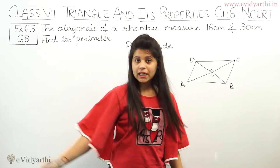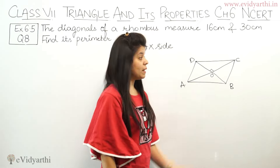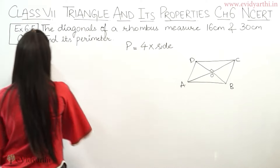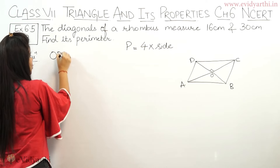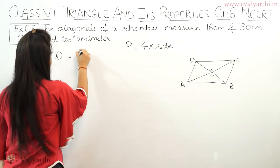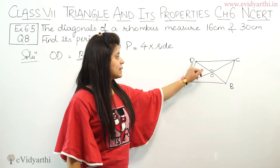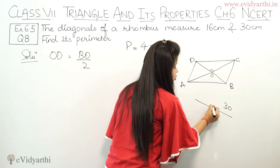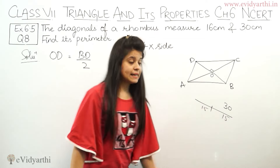To use this triangle I need OD and OC. Since the diagonals bisect each other, OD equals BD upon 2. The diagonal BD is 30, so it is divided into two equal halves — both are 15. That is 30 divided by 2 equals 15.